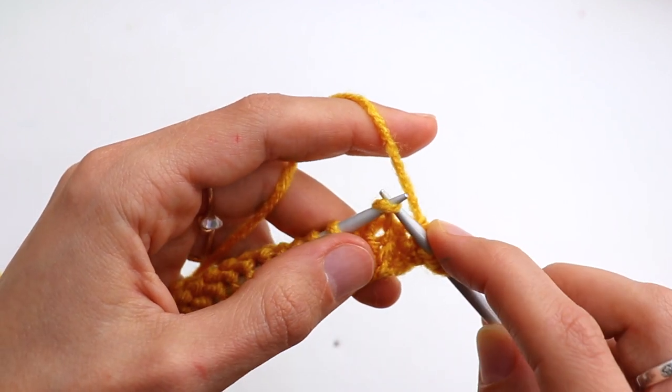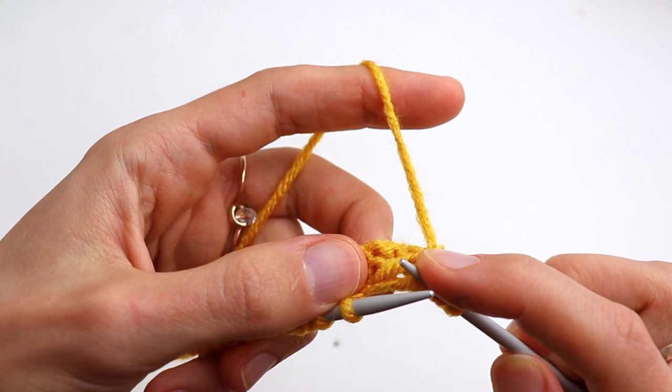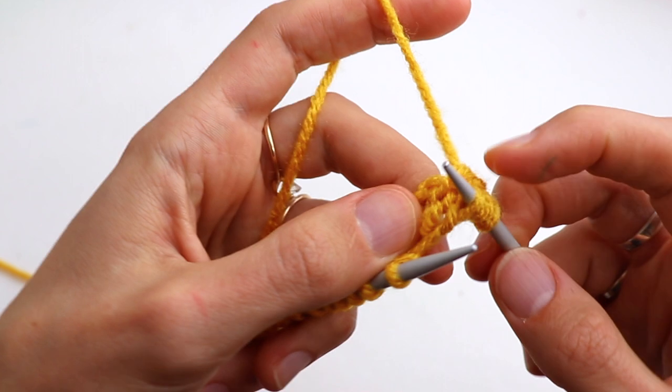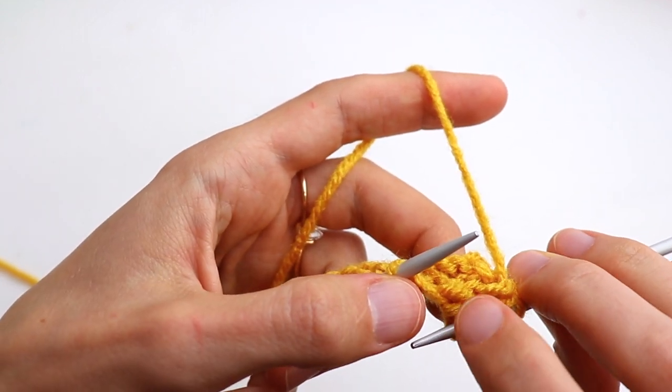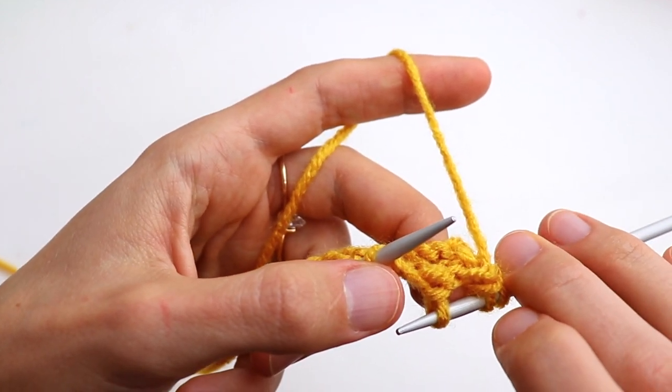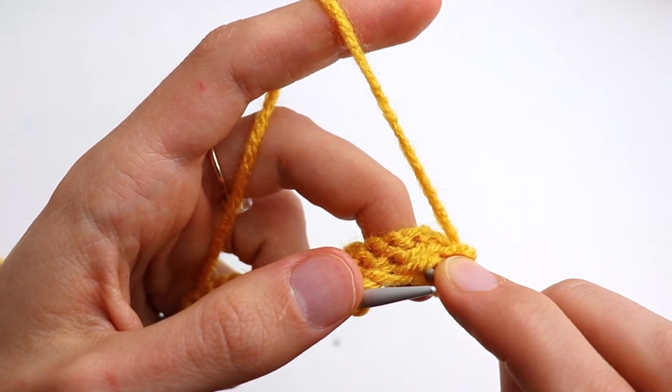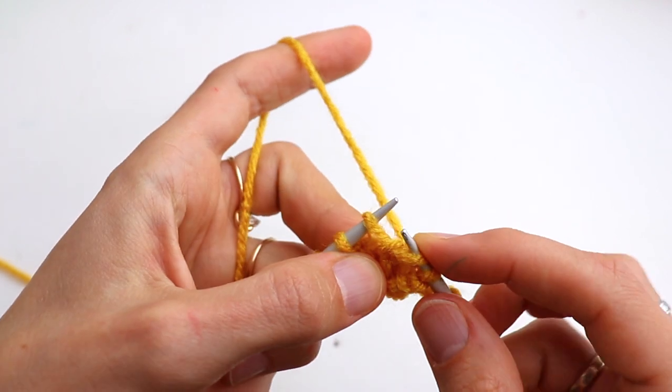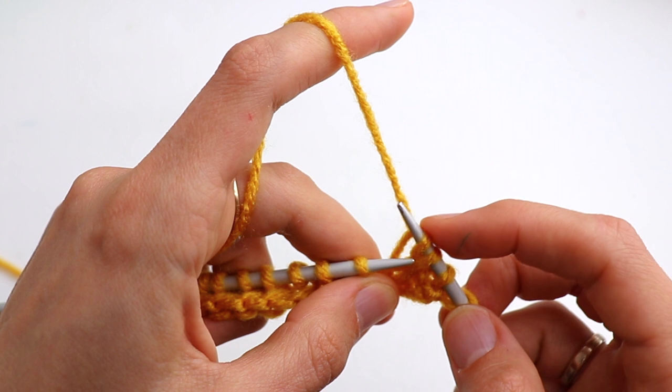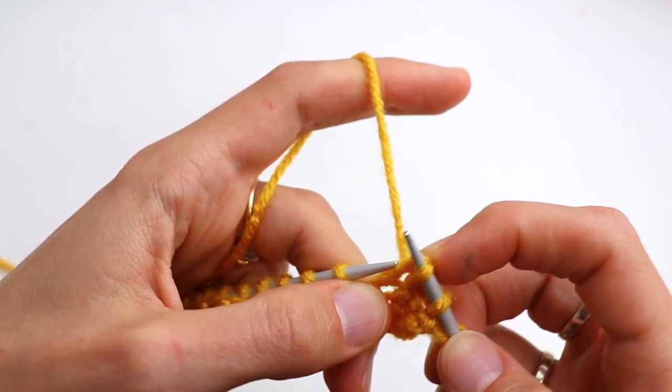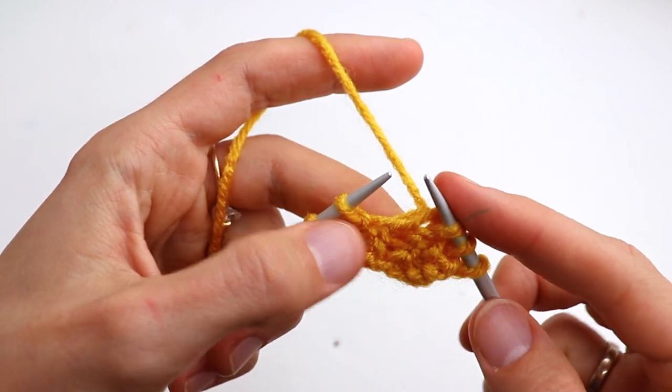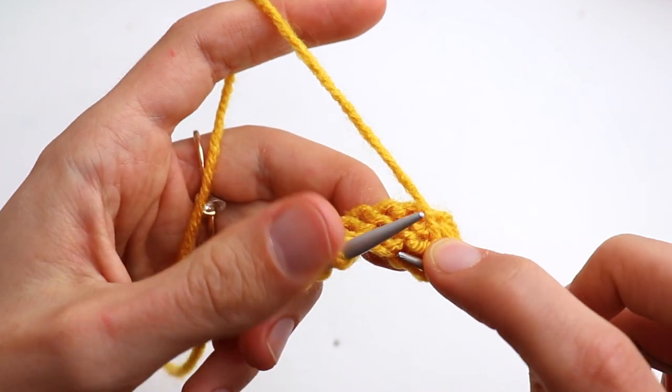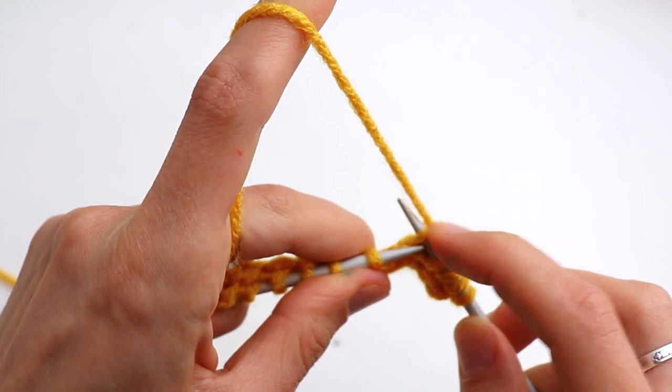Let's repeat again. Slip next stitch knitwise. Find the second ridge, so one and two. Place it on the left hand needle, knit it and pass over.